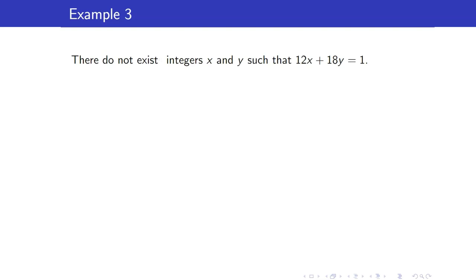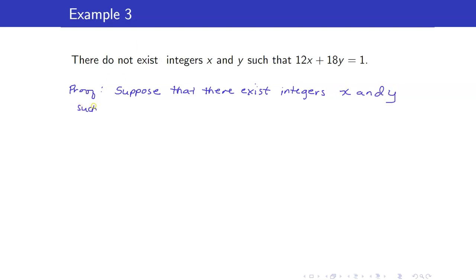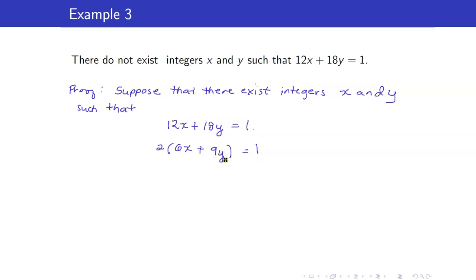Next, let us show that there do not exist integers X and Y such that 12X + 18Y = 1. We have no other way to prove this but by contradiction, because we just have one negated statement. So let us suppose that there exist such integers X and Y. Notice that 12X + 18Y has a common factor of 2: it equals 2(6X + 9Y) = 1. Since X and Y are integers, 6X + 9Y is an integer, which means 2 divides 1 — your contradiction.